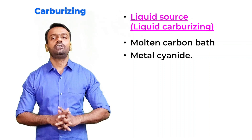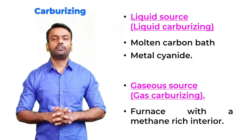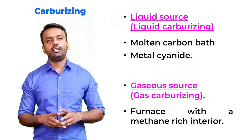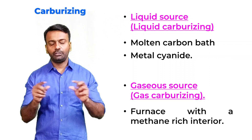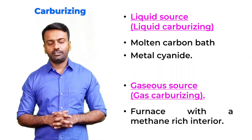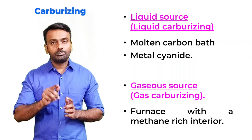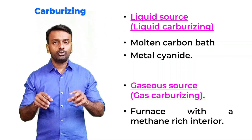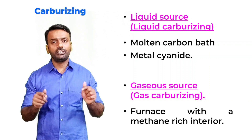In liquid carburizing, atoms migrate into the steel sample, forming a case-hardened layer. For gaseous carburizing, the carbon source is methane gas, which is passed through a furnace containing the sample. The gas infuses into the surface of the steel, giving a very good layer of carbon content and making it case hardened. Case hardening is done when you only want the surface to be hardened, not the entire bulk material — that requires separate heat treatments.